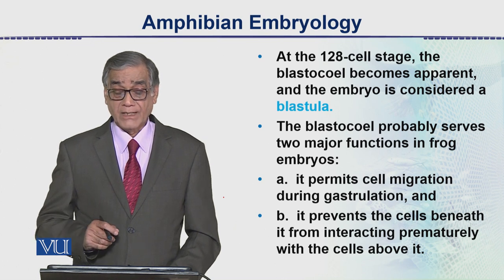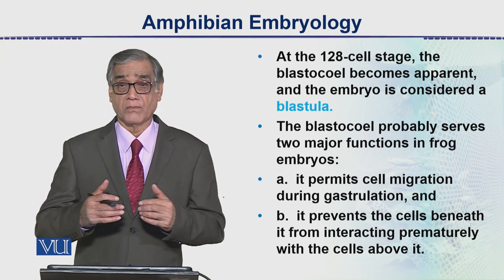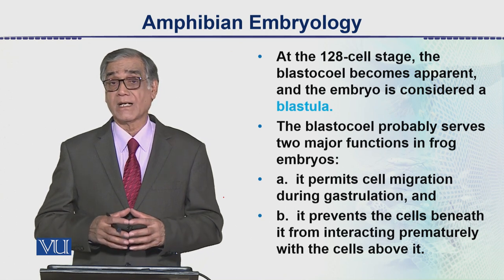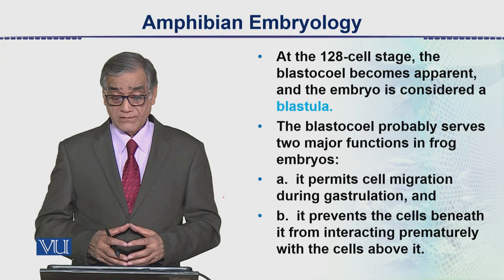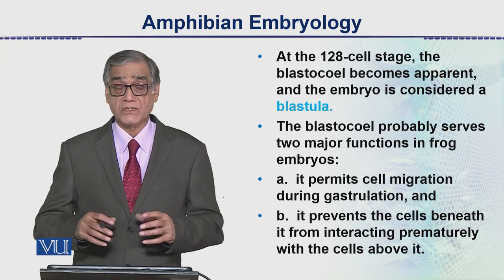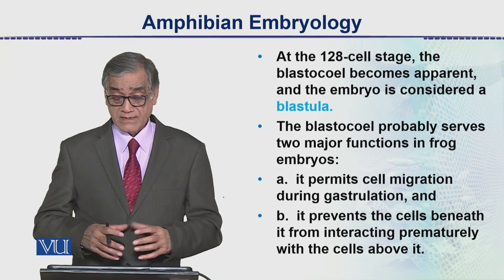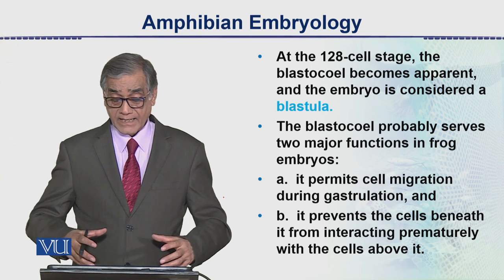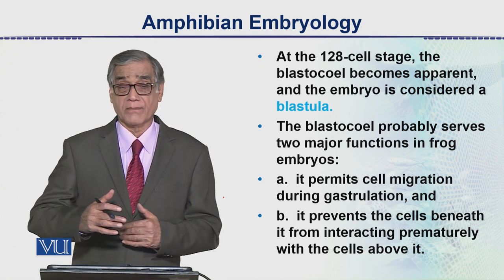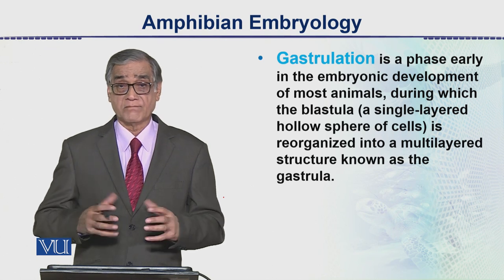Now at the 128-cell stage, the blastocoel becomes apparent — a cavity appears inside towards the animal pole. This is what we call the blastocoel, and the embryo is considered a blastula. The blastocoel probably serves two major functions in frog embryos: first, it permits cell migration during gastrulation; and second, it prevents the cells beneath it from interacting prematurely with the cells above it, keeping them separate. These are the two functions of the blastocoel, which is a water-filled cavity.